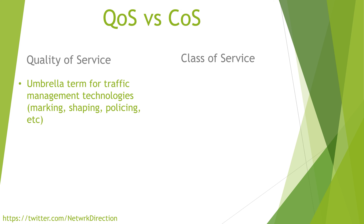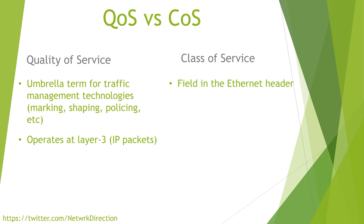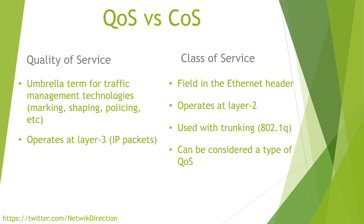QoS is the umbrella term for the traffic management technologies we've been talking about, including marking packets, policing, shaping, and other things. These technologies generally work at layer 3 of the OSI model, which means they focus on IP packets. Class of service, on the other hand, is a value in the Ethernet header, which means it operates at layer 2. Specifically, it's used over 802.1Q trunk links, which generally means it's used on traffic between switches. The switches set priority on these frames and decide which frames to prioritize over others. Class of service is still a traffic management technology, so it can be considered one of the QoS technologies.